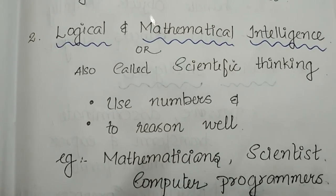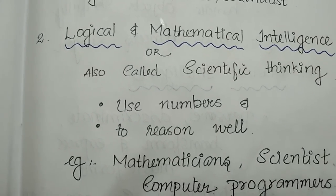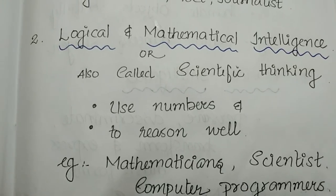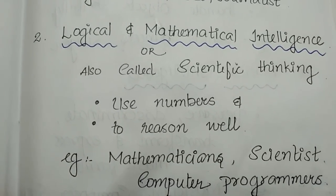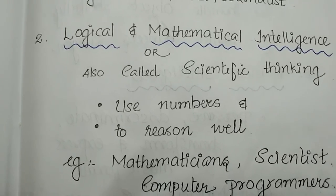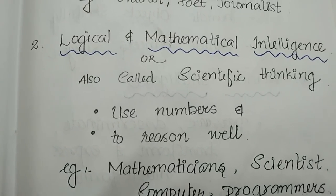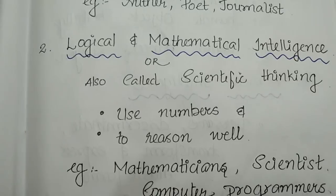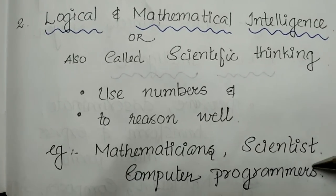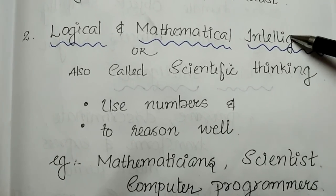The second category is logical and mathematical intelligence, part of Howard Gardner's Multiple Intelligence Theory. This involves scientific thinking and the use of numbers and reasoning. Examples include mathematicians, scientists, and computer programmers — all fall under logical and mathematical intelligence.